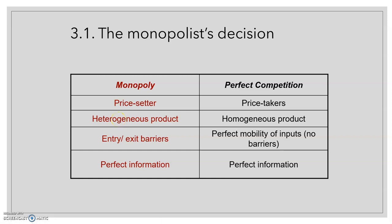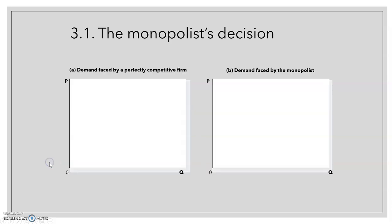The monopolist is the only seller of this heterogeneous product. Third, in perfect competition there are no entry or exit barriers, whilst in a monopoly there will be entry or exit barriers. This could be one of the reasons for having a monopoly: if there are entry barriers, this is the reason other companies are not able to enter the market — it hinders other companies from entering. Fourth, one common characteristic in both markets is perfect information.